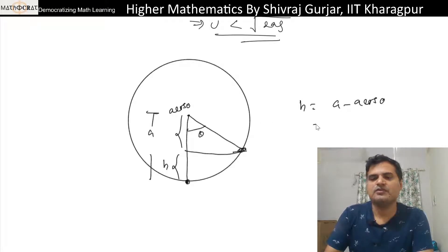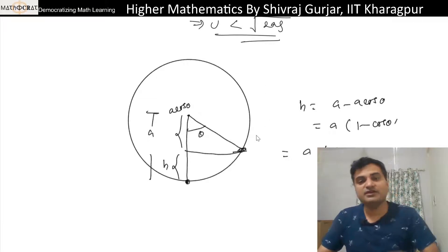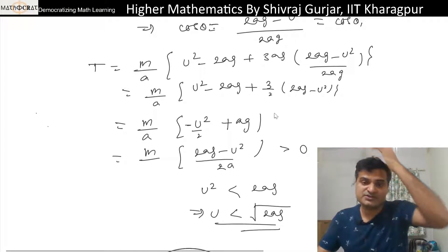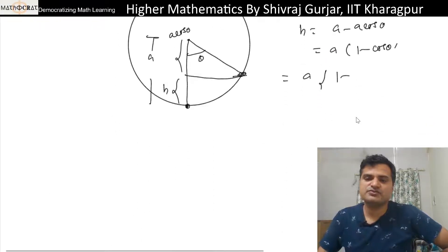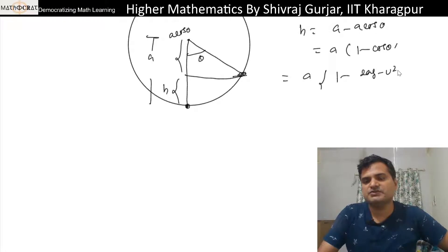and this part is a cos θ so this height is nothing but a - a cos θ or a(1 - cos θ). 1 - cos θ क्या है? In this case, cos θ when tension is not zero but velocity is zero, that is 2ag - u² divided by 2ag.